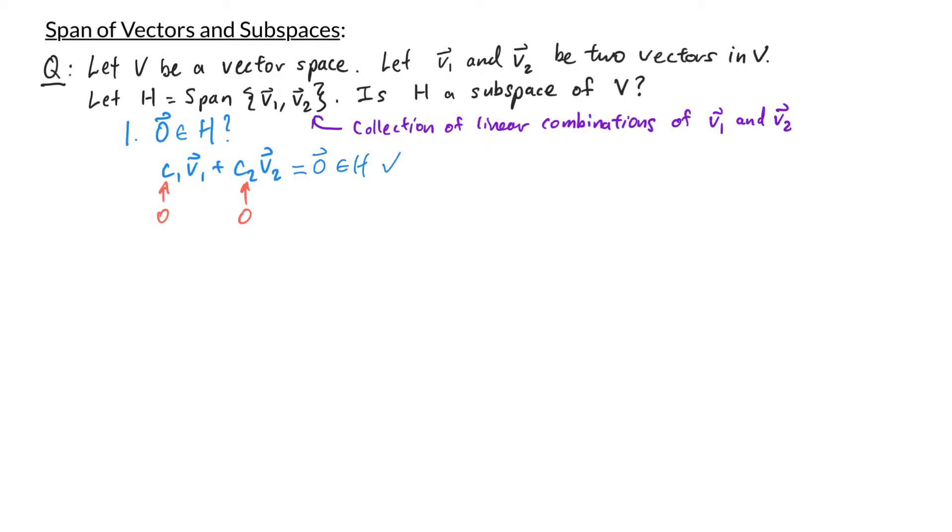The second condition that we need to check is whether h is closed under addition. To show this we want to start with two arbitrary elements in h and check that their sum is also in h. So let's take one arbitrary linear combination a1 v1 plus a2 v2 and another arbitrary linear combination b1 v1 plus b2 v2. Now their sum can be written as a1 plus b1 times v1 when we group terms together plus a2 plus b2 times v2. A1 plus b1 is just some scalar and a2 plus b2 is another scalar. So the sum is just a linear combination of v1 and v2 therefore it's in h. So we've checked that h is closed under addition.